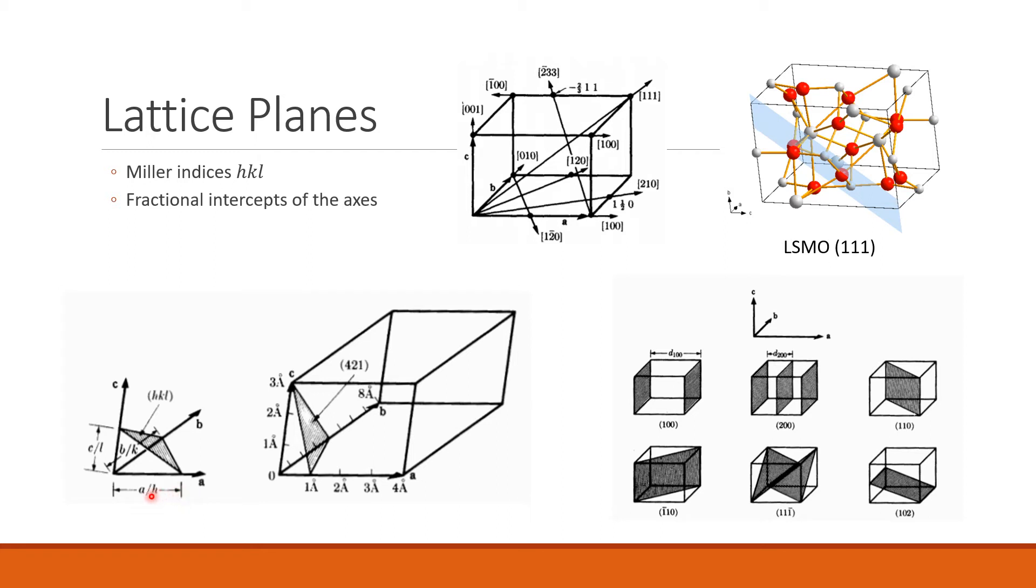So h represents the fractional intercept a divided by h that the plane makes with the axis a, and the same with b divided by k intercepting the axis b, and then the same with c divided by l. You can see an application of this with this plane 4, 2, 1. This 4 corresponds to the fractional intercept with axis a, meaning that it intercepts with one-fourth of the unit cell in axis a, and the same for one-half of b and then one with c.